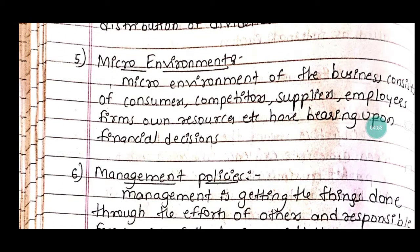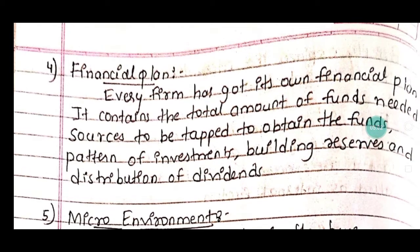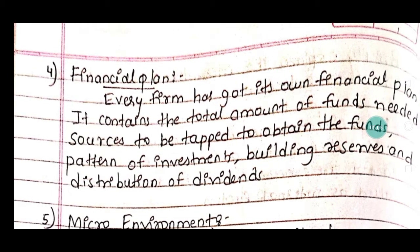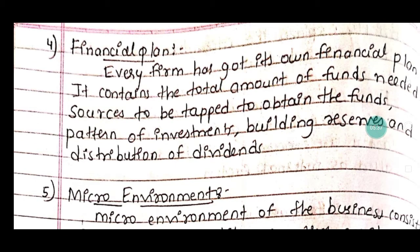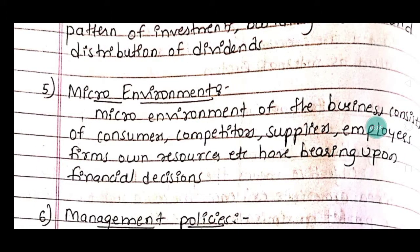The fourth important internal factor is the financial plan. Every firm has its own financial plan. It contains the total amount of funds needed, the sources to be tapped to obtain the funds, the pattern of investment, building reserves, and distribution of dividends — that is, where to invest the money and how much fund to invest. All of this is considered in the financial plan.